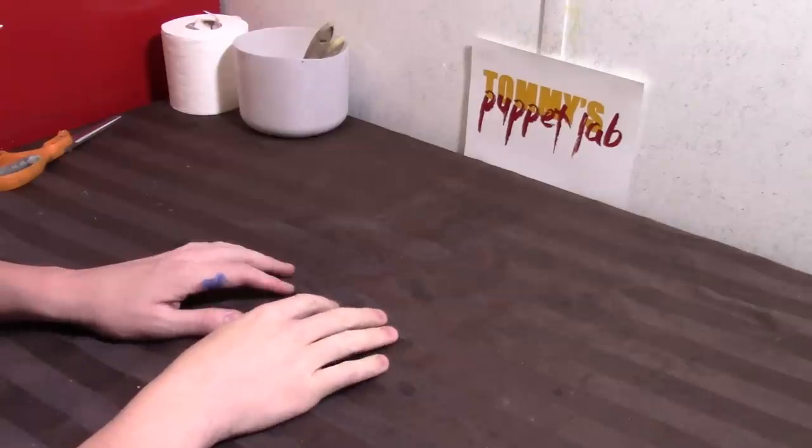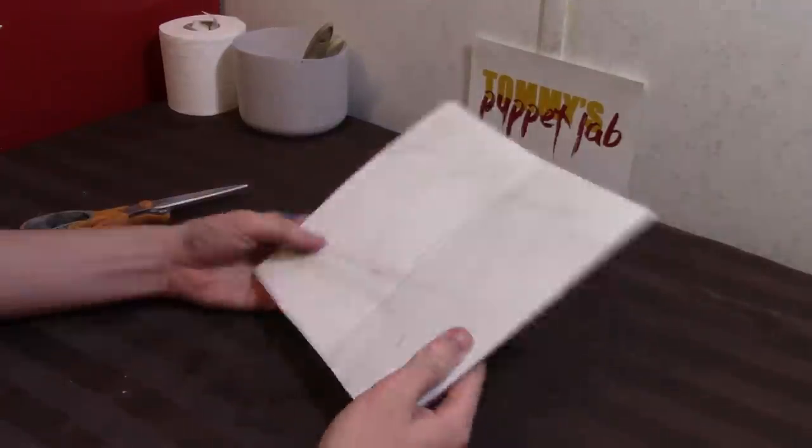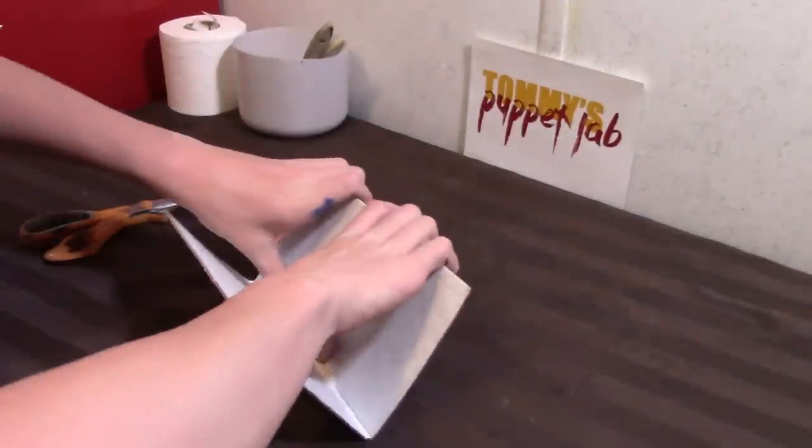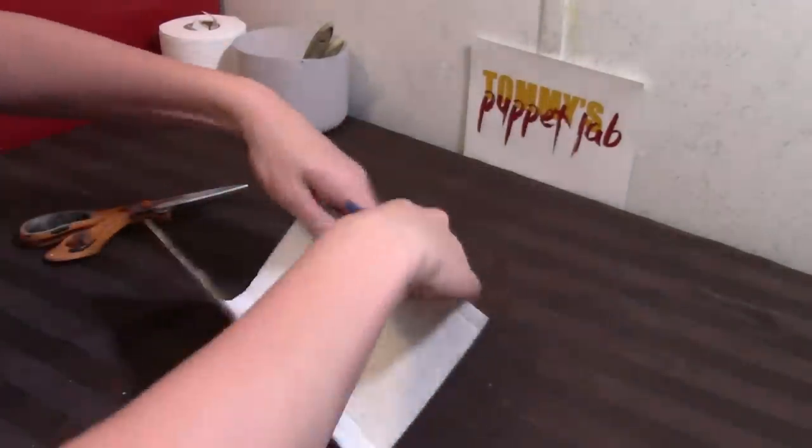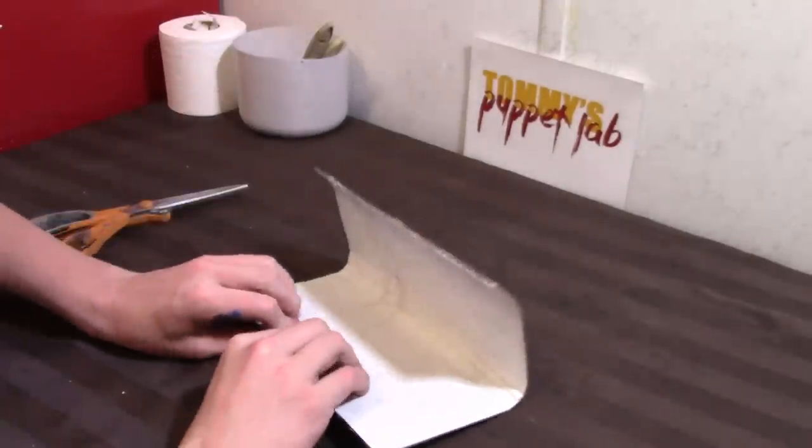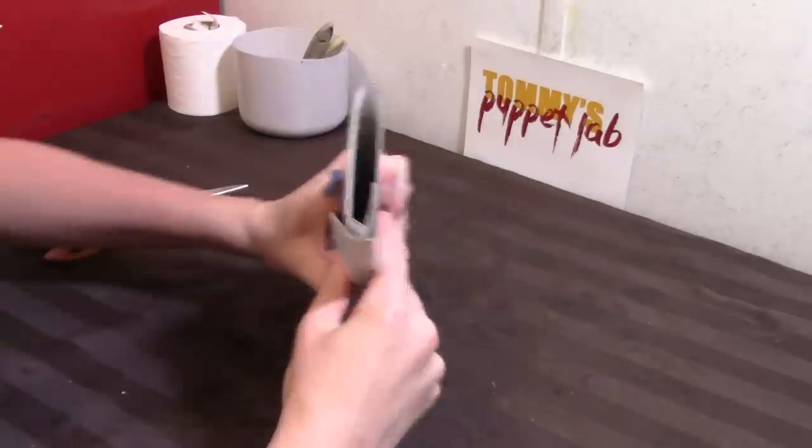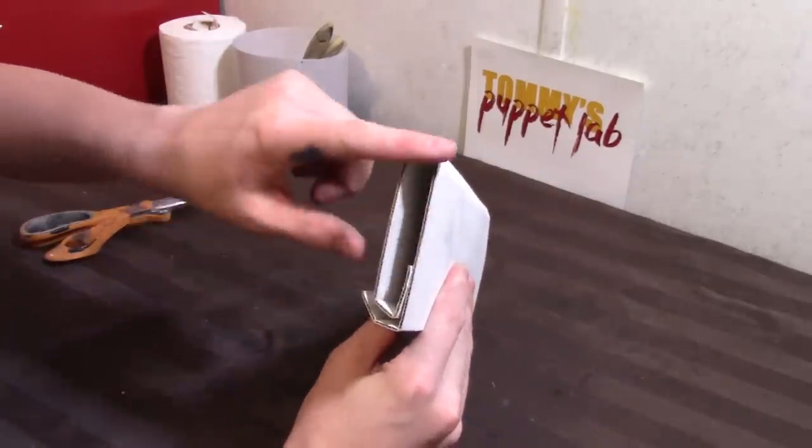Alright, so in this video we will be making Gotta Sweep. So you will need some cardboard. You're going to cut out a cardboard square and we're going to fold it. And we're actually going to wrap it around each other. We're going to wrap it around the ends together. And you should have something that looks like this. You want just a little bit of space here.